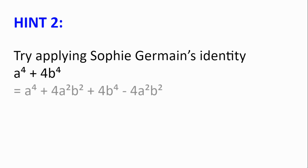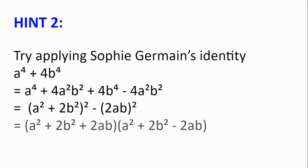We can rewrite that as a to the power of 4 plus 4a squared b squared plus 4b to the power of 4 minus 4a squared b squared, which can be factorized as a squared plus 2b squared squared minus 2ab squared, which by the difference of two squares we can factorize to get a squared plus 2b squared plus 2ab multiplied by a squared plus 2b squared minus 2ab.